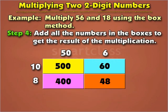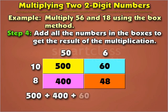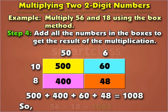Step 4: Add all the numbers in the boxes to get the result of the multiplication. Five hundred plus four hundred plus sixty plus forty-eight is equal to one thousand eight. So, fifty-six into eighteen is equal to one thousand eight.